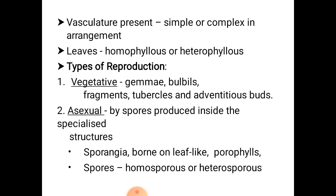In vegetative reproduction, the sporophytic plant reproduces vegetatively by gemmae, bulbils, fragments, tubercles and adventitious buds.